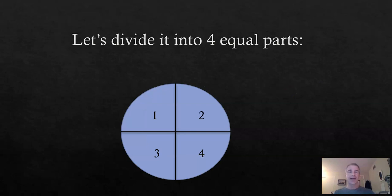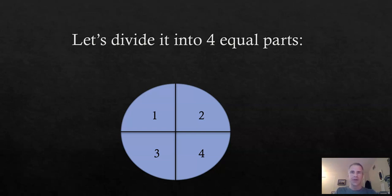Now, we can divide it into four equal parts. That's what we did there. See, we got four, almost like slices of pizza, right? Or pieces of pie. So, we got one, two, three, four. Four equal parts, okay? Now, see where the yellow arrow is pointing? That piece is one part out of the four equal parts. That's one out of the four, okay?